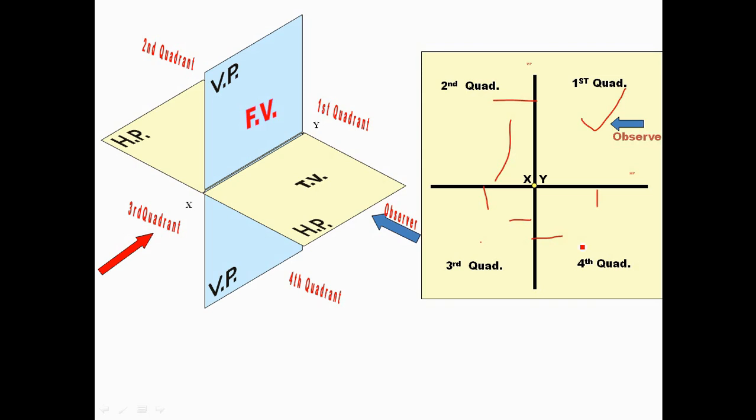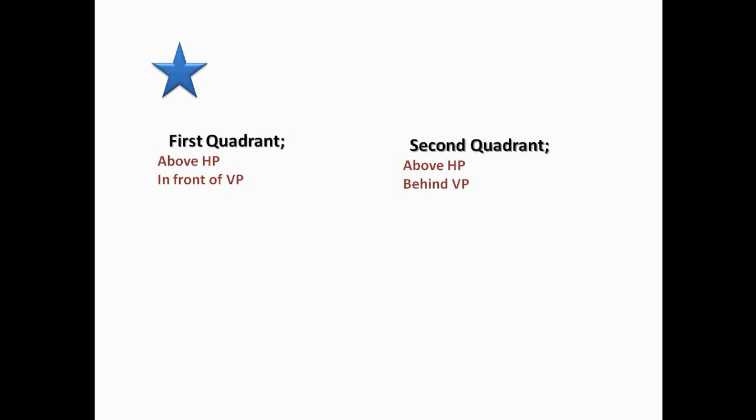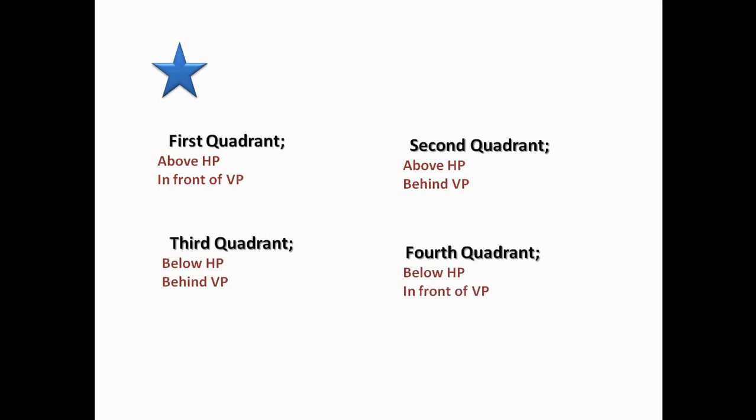The top view is on the horizontal plane and the front view is on the vertical plane. These are called the principal planes — the horizontal plane and the vertical plane, which are perpendicular to each other. We need to remember: first quadrant is above HP, in front of VP; second quadrant above HP, behind VP; third quadrant below HP, behind VP; fourth quadrant below HP, in front of VP.